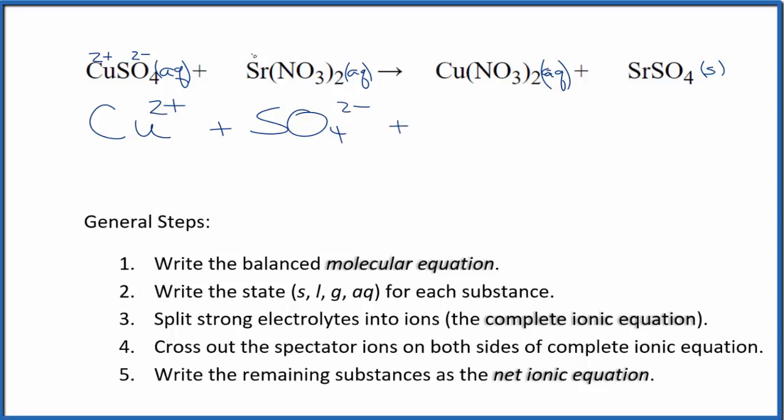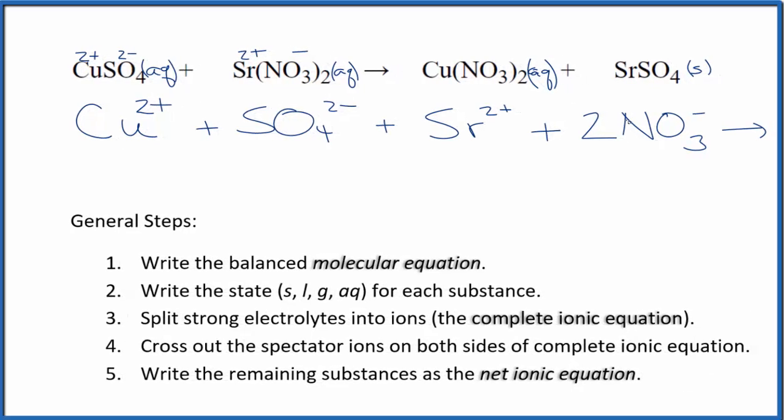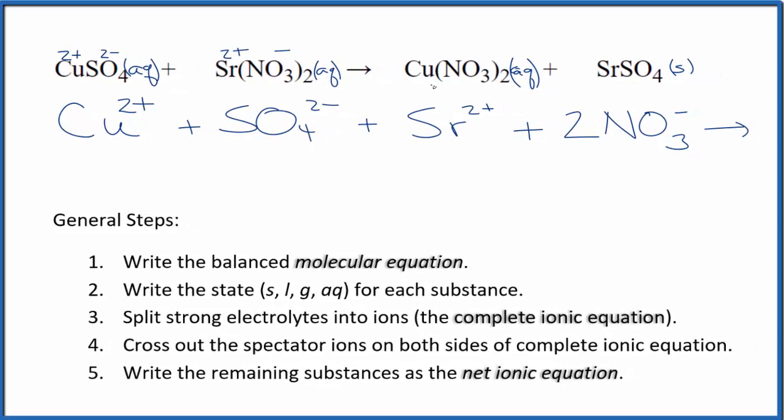Strontium is in group 2, that's 2 plus. The whole nitrate ion is 1 minus. So we have the strontium ion, Sr²⁺. And then for the nitrate, we have 2 of these nitrate ions here. So these are the reactants in our net ionic equation.